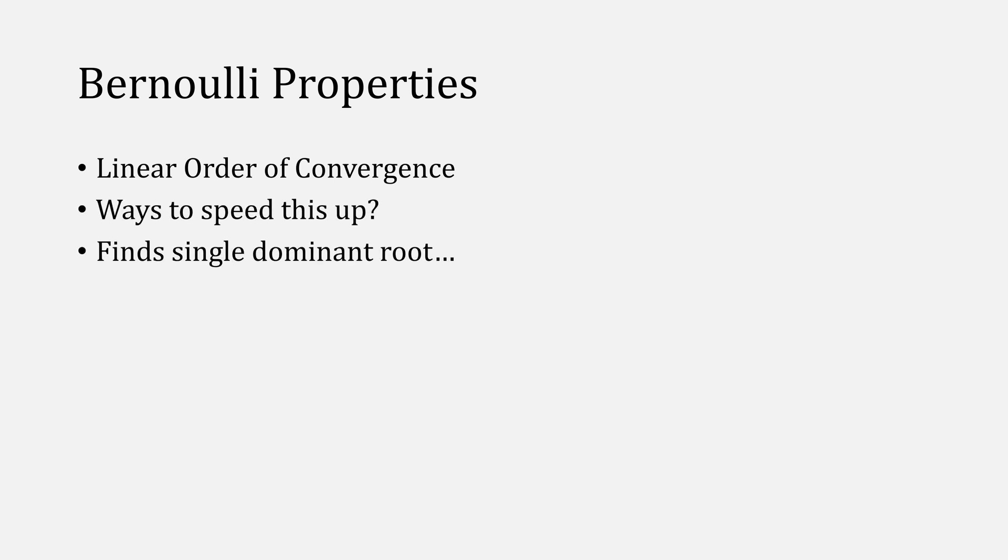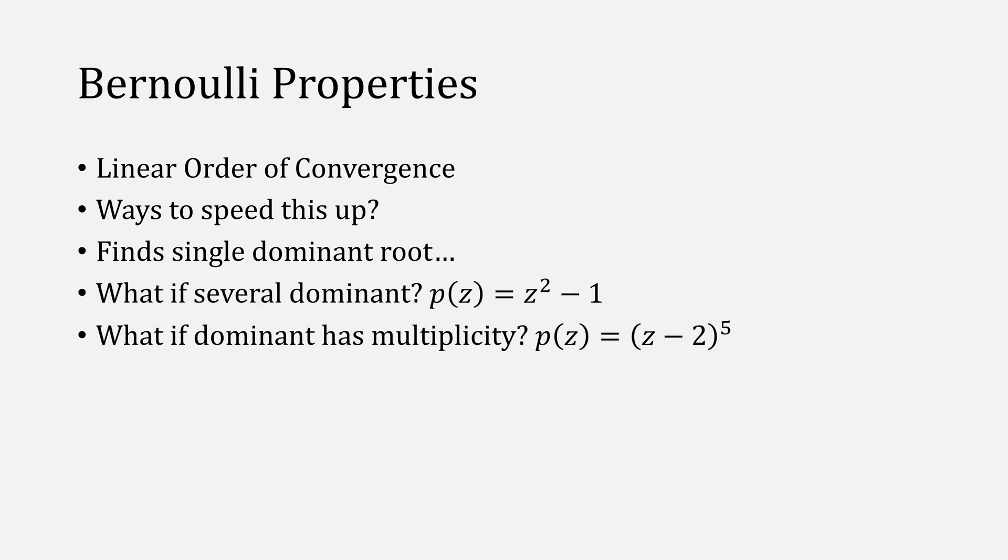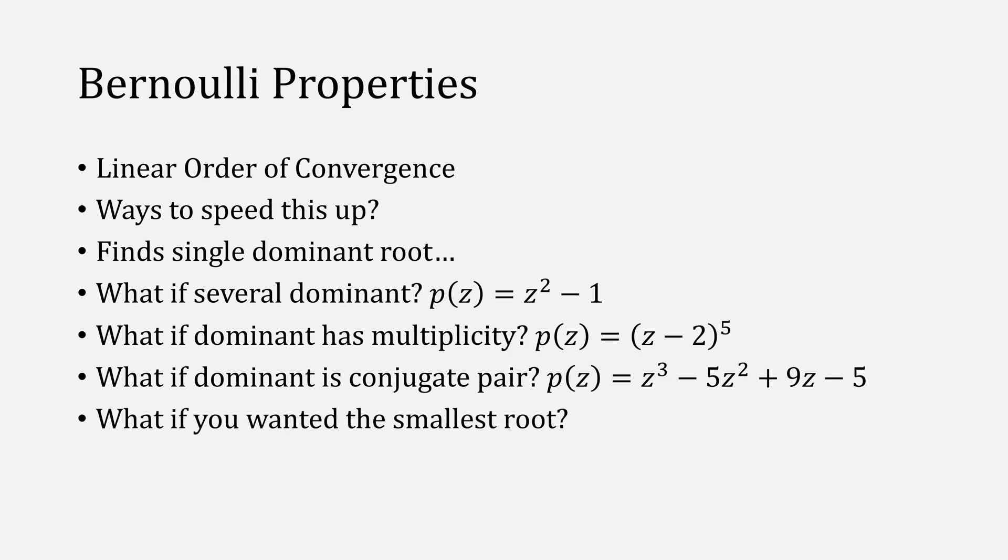It also only finds a single dominant root. But what if there are several dominant? Or what if there's multiplicity? Or what if they were conjugate pairs? What if you wanted to find the smallest root?